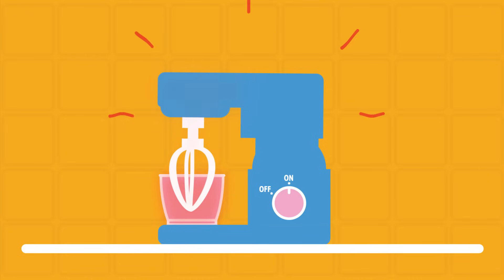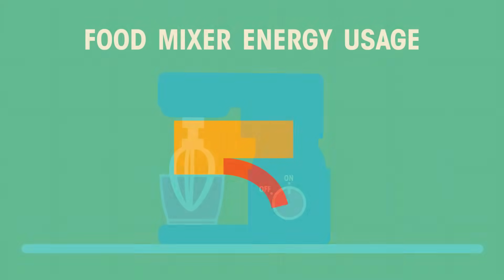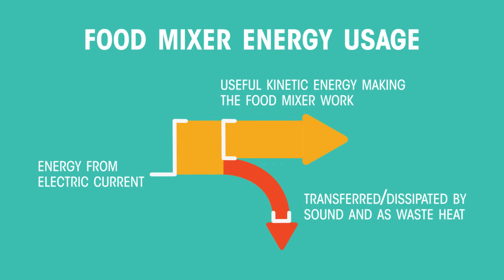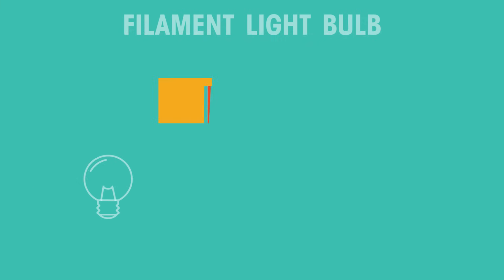The warm food mixer gradually cools as its heat is spread into the room. We can also draw it like this: the height of the box represents the amount of energy that's put in, and the height of the next box represents the amount of useful energy.